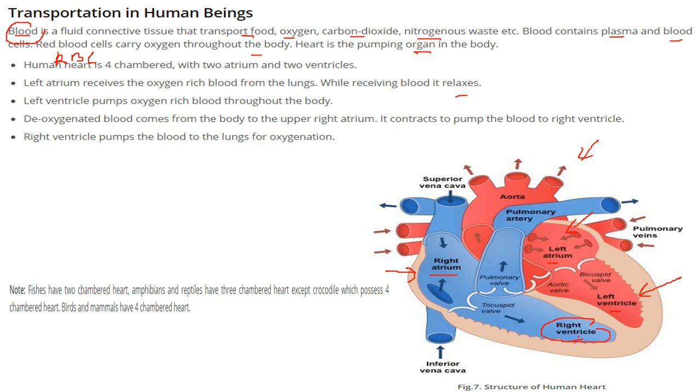If you take the example of fish, they have a two-chambered heart. Amphibians and reptiles have a three-chambered heart. Crocodile, because it is a reptile, but still it has a four-chambered heart. Birds and mammals have four-chambered hearts.